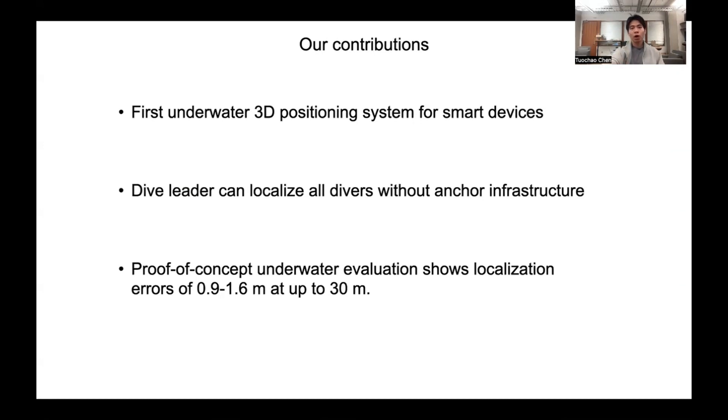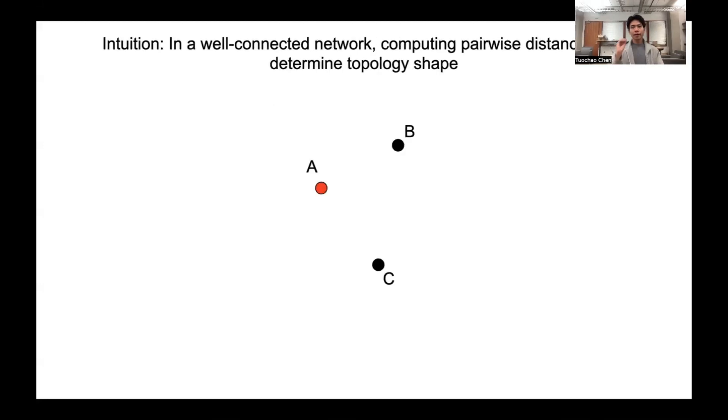Now, let me tell you how our system works. Here is our intuition. In a well-connected network, if we can compute the pairwise distances, we can determine the shape of network topologies.